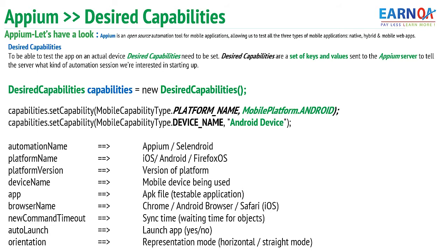We need desired capabilities because we need to configure the mode of the testing platform we require — we need to specify what and where we want to test. While we specify and indicate that with the desired capabilities in the Selenium WebDriver and execute that script, Appium can read it based on the desired capabilities we specify.